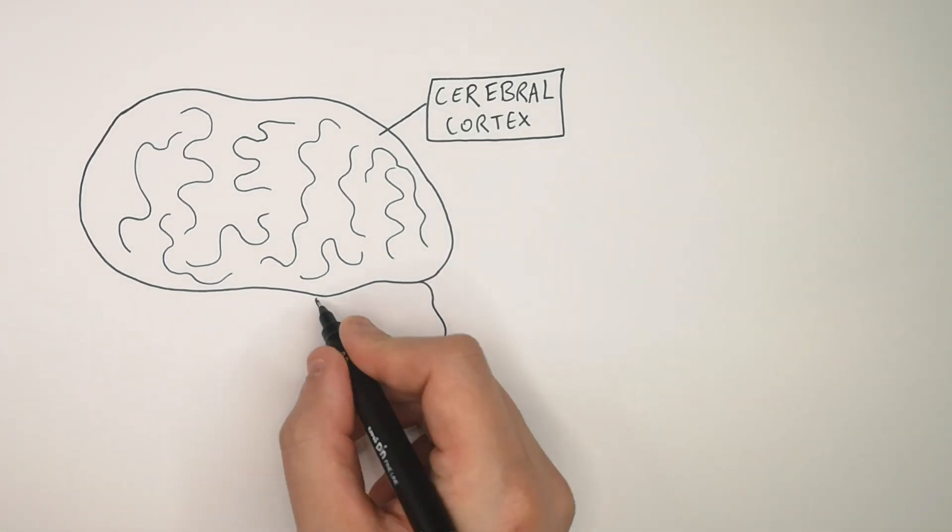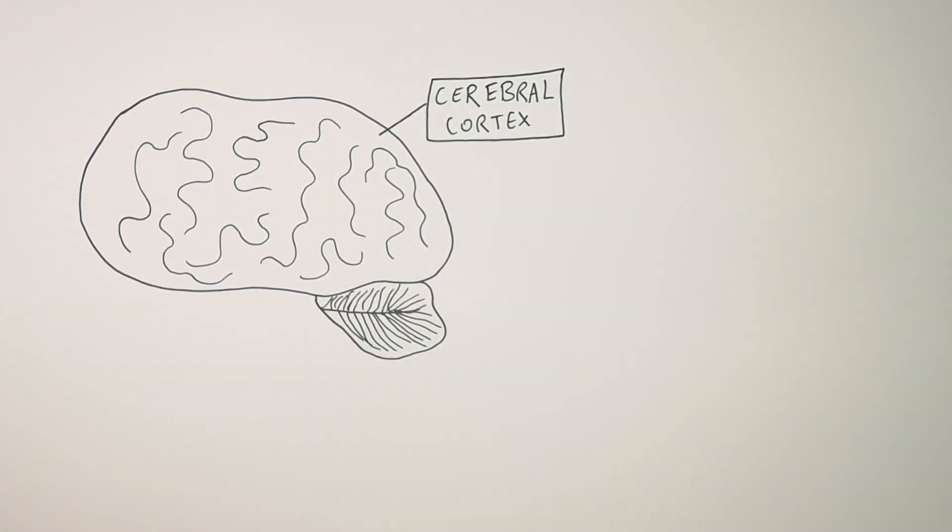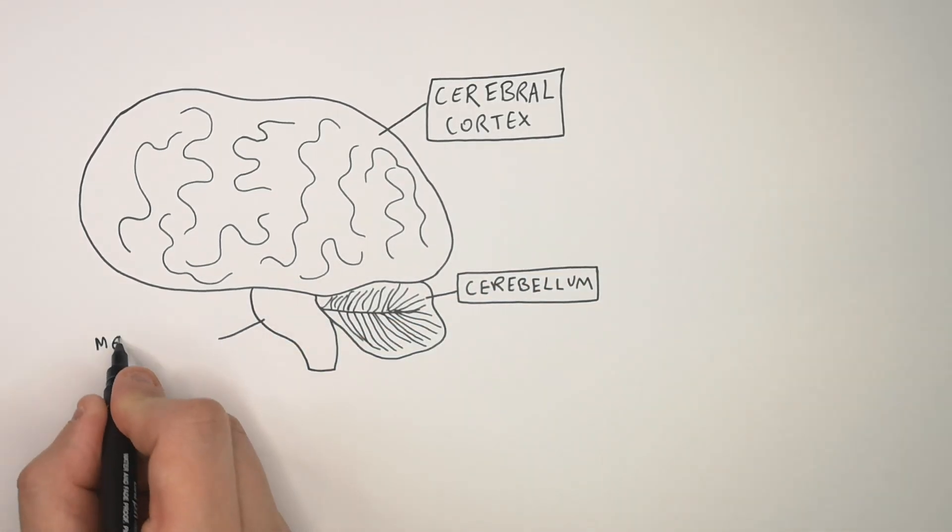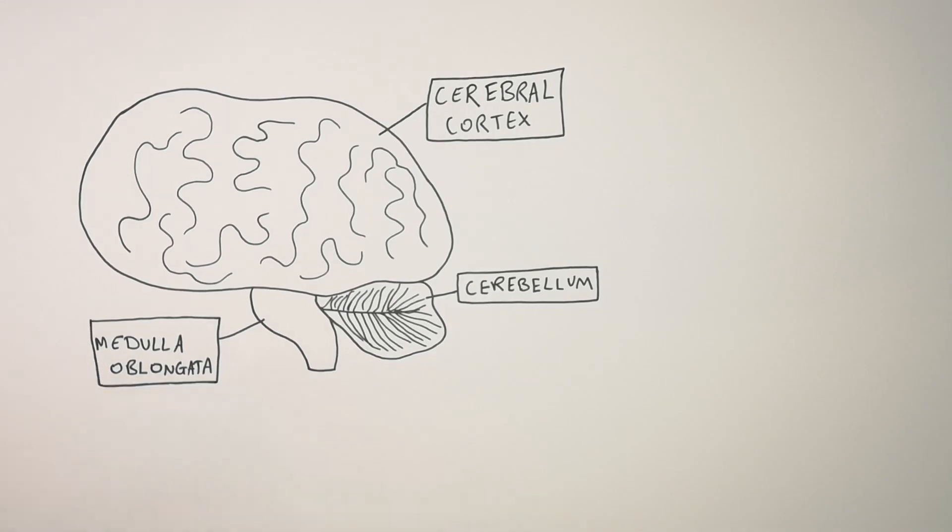The lower rear region of the brain is called the cerebellum. In the lower part of the brain we've got the medulla oblongata, which leads on to the spinal cord which takes neurons around the body.